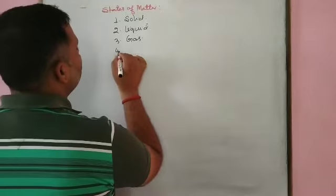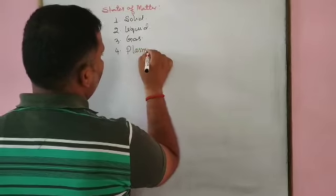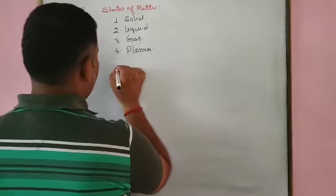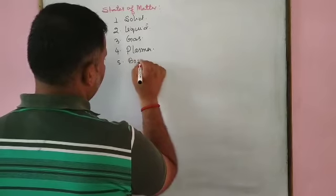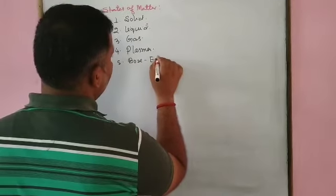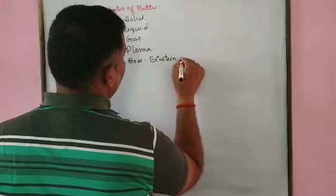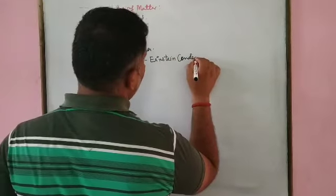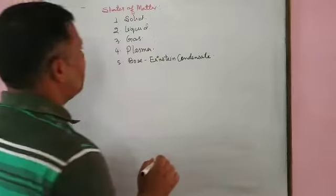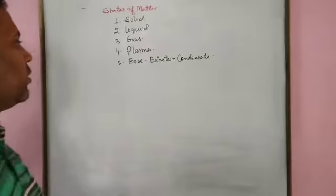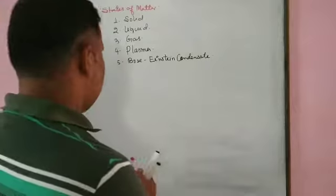The next state is known as plasma. And the next one after that is aerosol. We have already discussed solid, liquid, and gas.